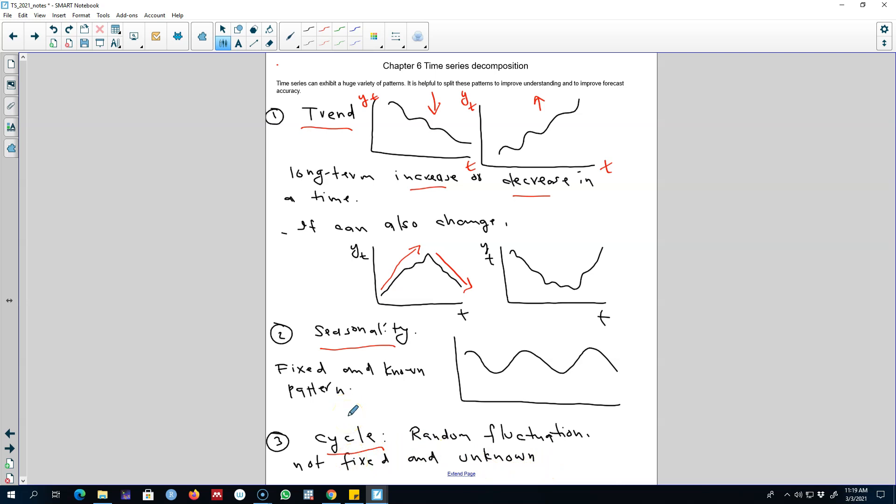So these are the three patterns that we can observe in a time series: the trend pattern, which is a long run increase or decrease in a time series; seasonality, which is a fixed and known frequency that repeats itself over and over again in a time series;